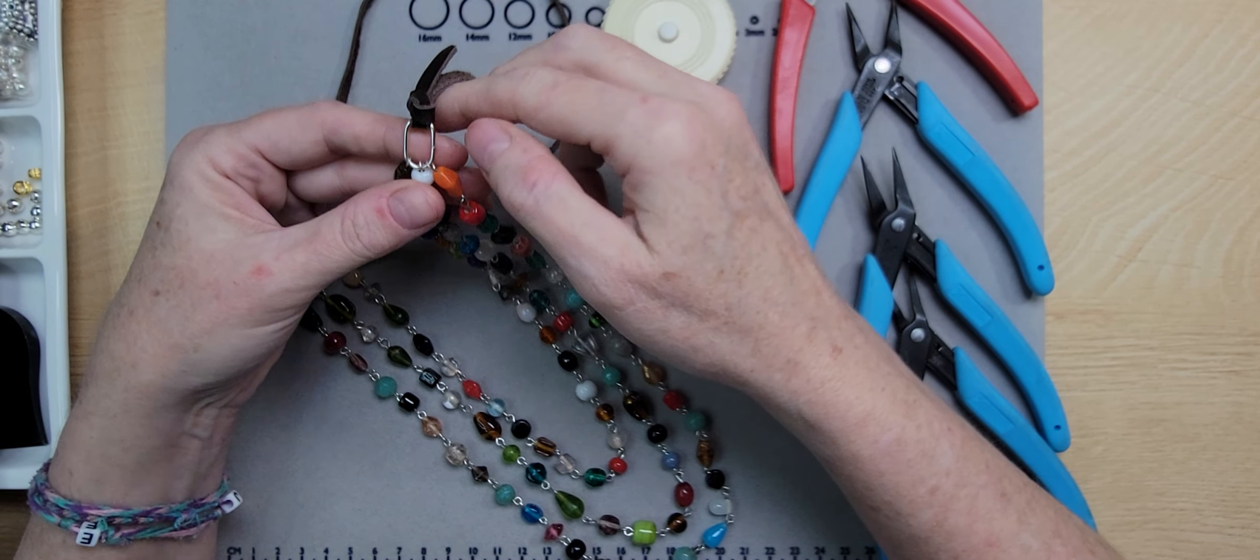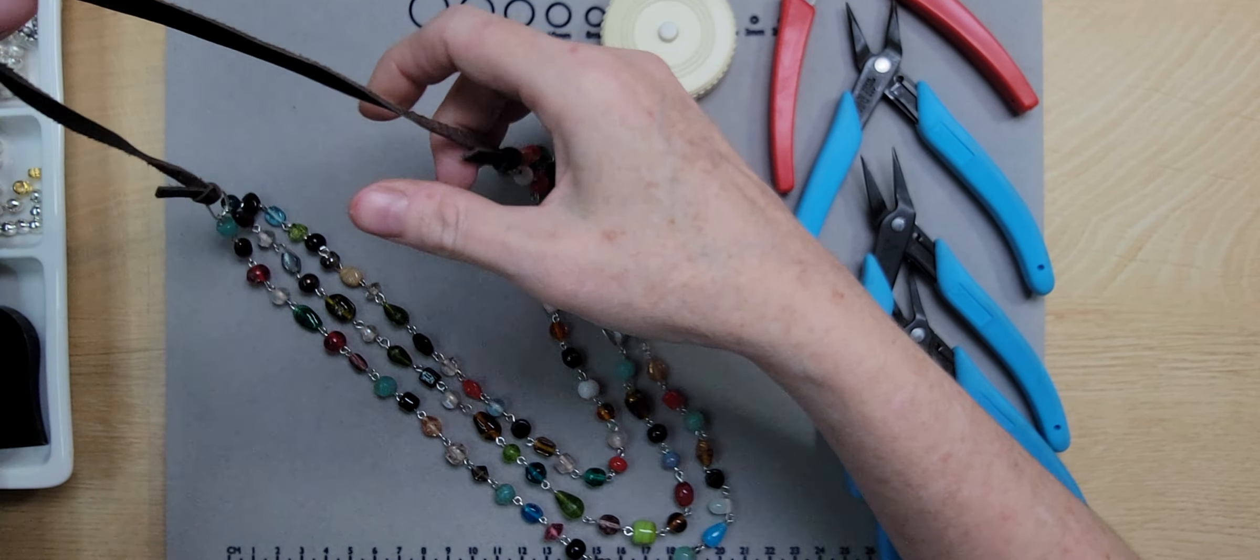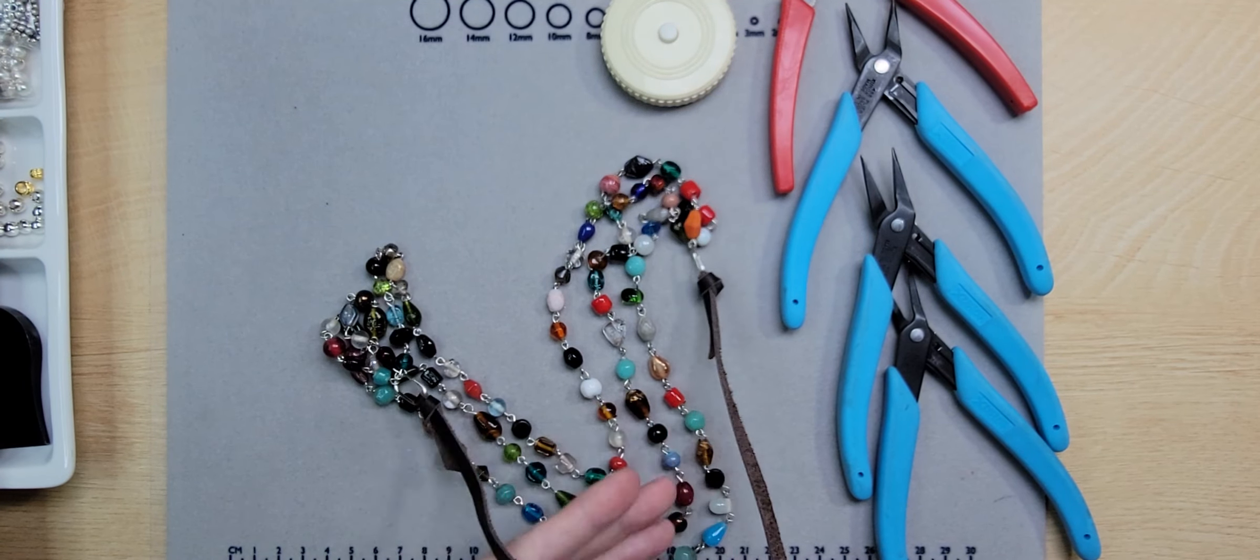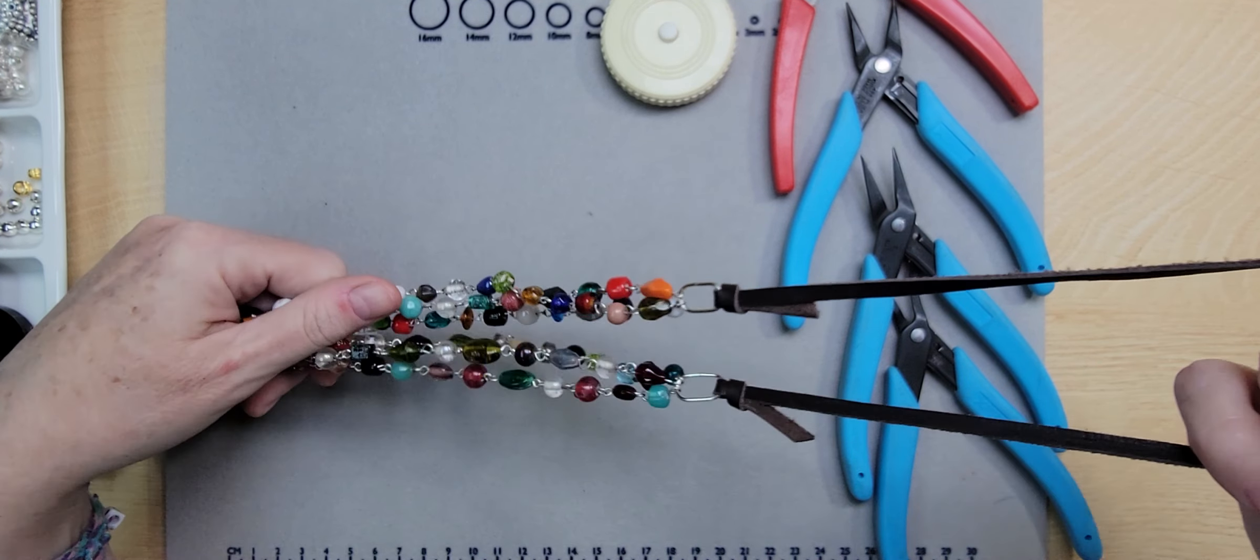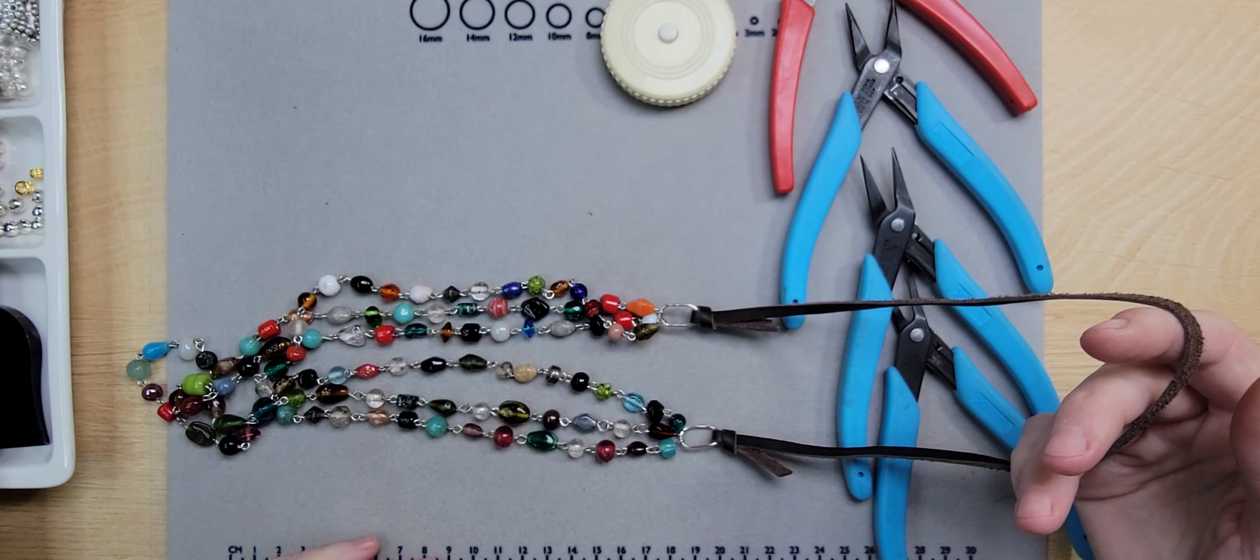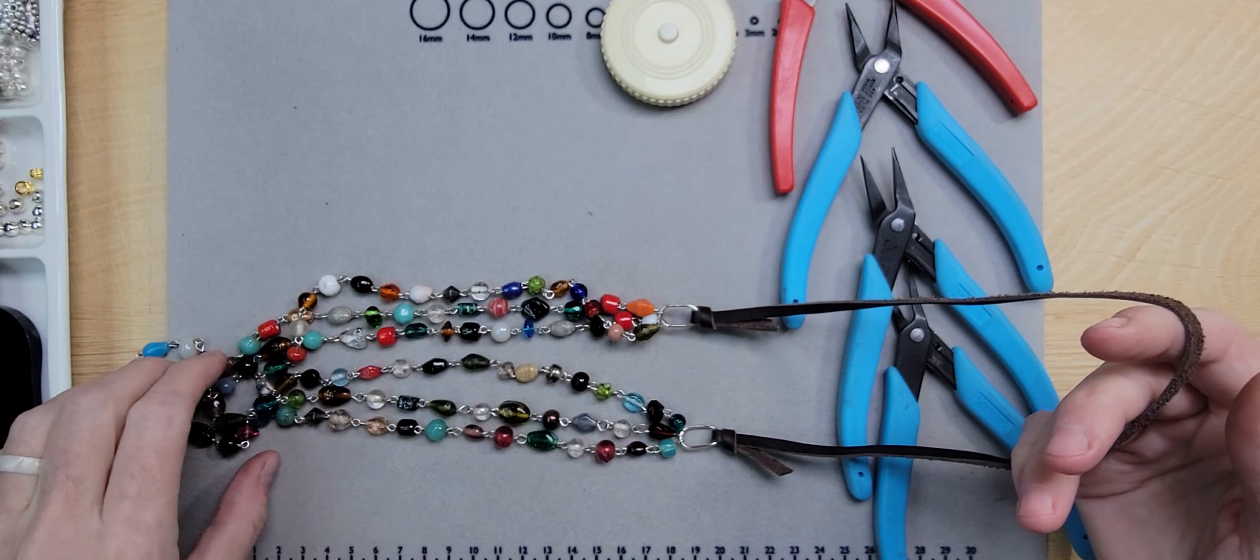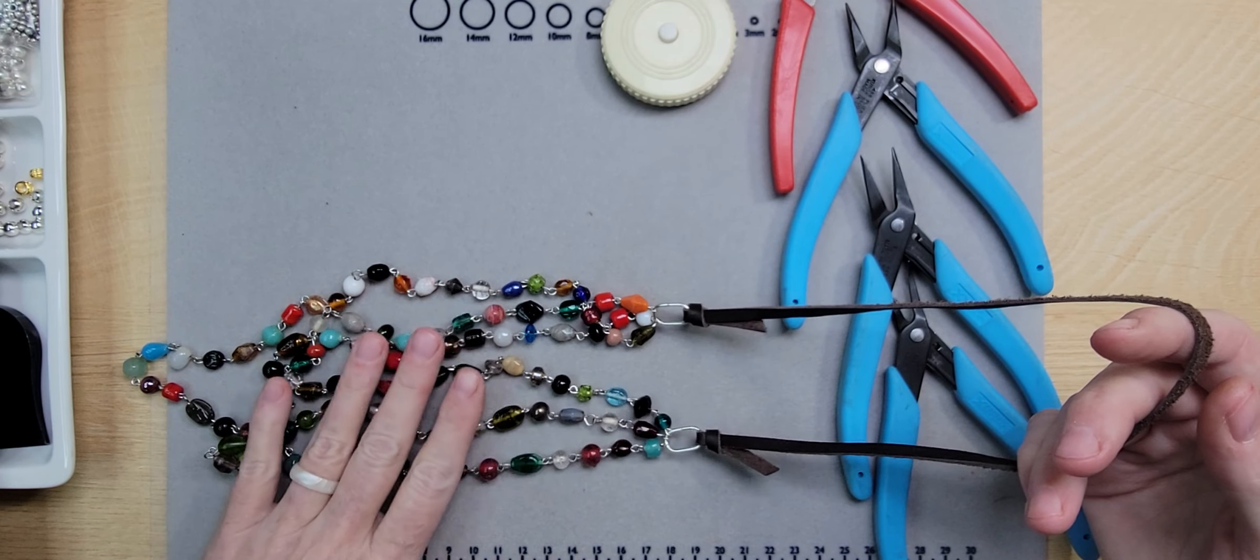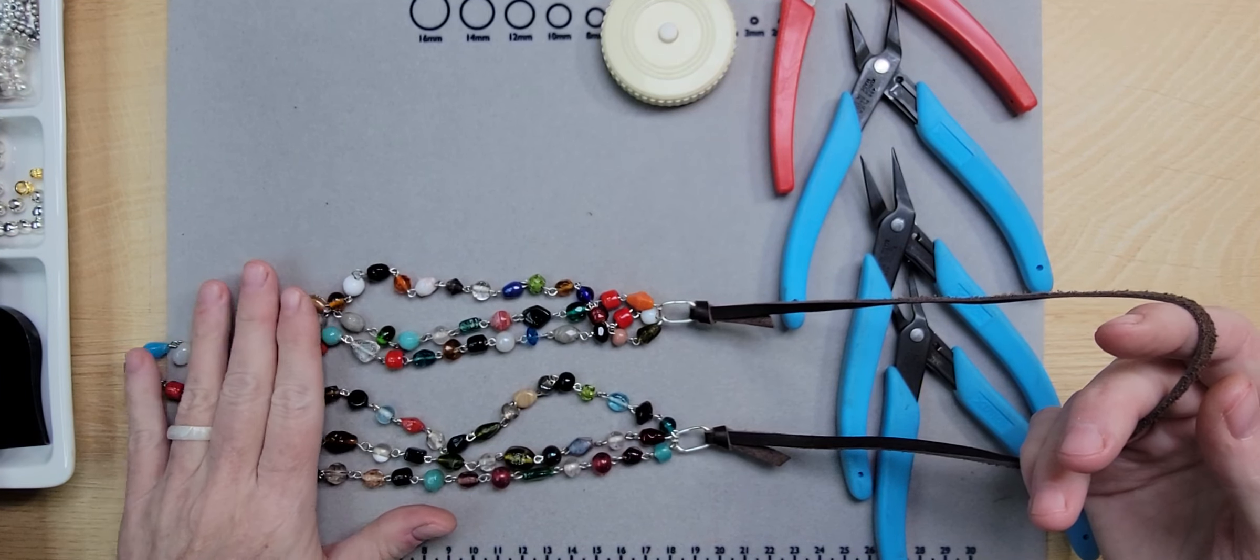So it comes out to about 32 inches overall, so it does not require a clasp. It can be slipped over your head to be worn. Very comfortable, pretty drape, a good weight - not too heavy but it'll hang really nicely.